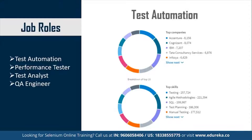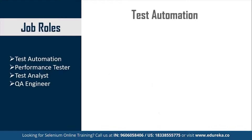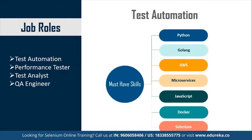The top skills required to become a Test Automation Engineer include knowledge of Testing, Agile Methodologies, SQL, Test Planning, and Manual Testing. Apart from these, you need to be well acquainted with programming languages like Python, Golang, and JavaScript. You also need to be well versed with AWS, Microservices, Docker, and Selenium. These skills will help you move to a higher position as a Test Automation Engineer and also add to your appraisal.